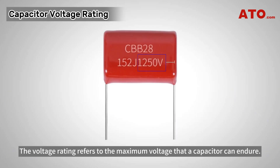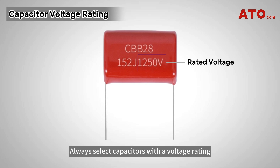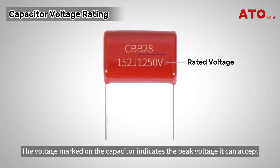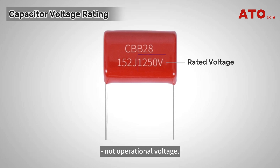The voltage rating refers to the maximum voltage that a capacitor can endure. Always select capacitors with a voltage rating that is higher than the line voltage to prevent safety risks. The capacitance and the voltage rating can be used to define the capacitor code. The voltage marked on the capacitor indicates the peak voltage it can accept, not operational voltage.